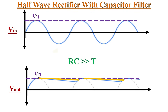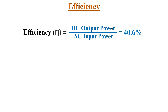Hence we can also reduce the ripples in the output waveform. If the RC time constant is less than the time period of the waveform, then the capacitor discharges quickly and this increases the ripples in the output. To avoid this problem we should always check the RC time constant of the filter circuit.